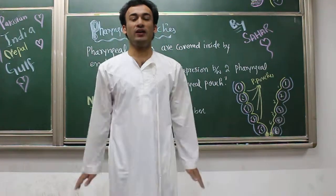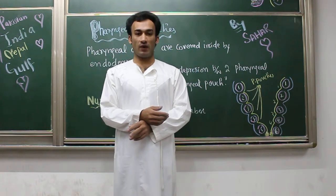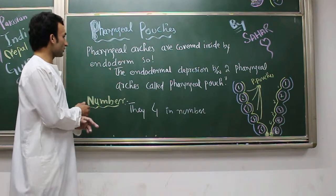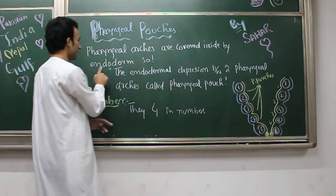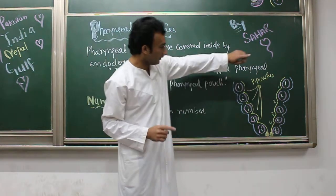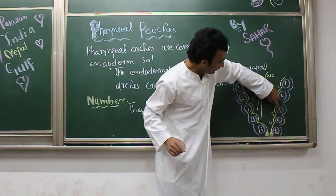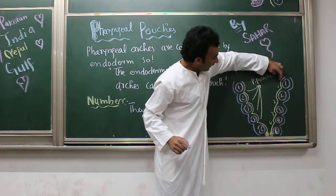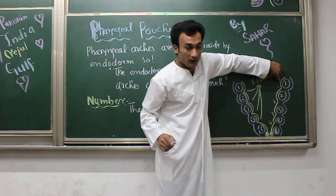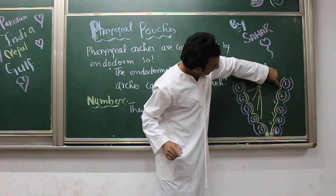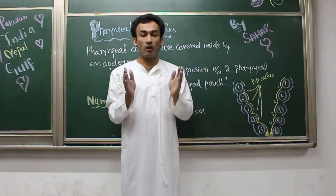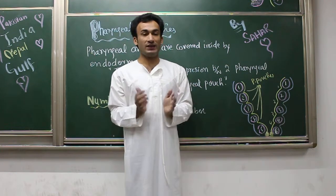Today we are going to start a new topic: pharyngeal pouches. We already finished the pharyngeal arches. The pharyngeal arches are covered inside by endoderm, so the endodermal depression between two pharyngeal arches is called a pharyngeal pouch.